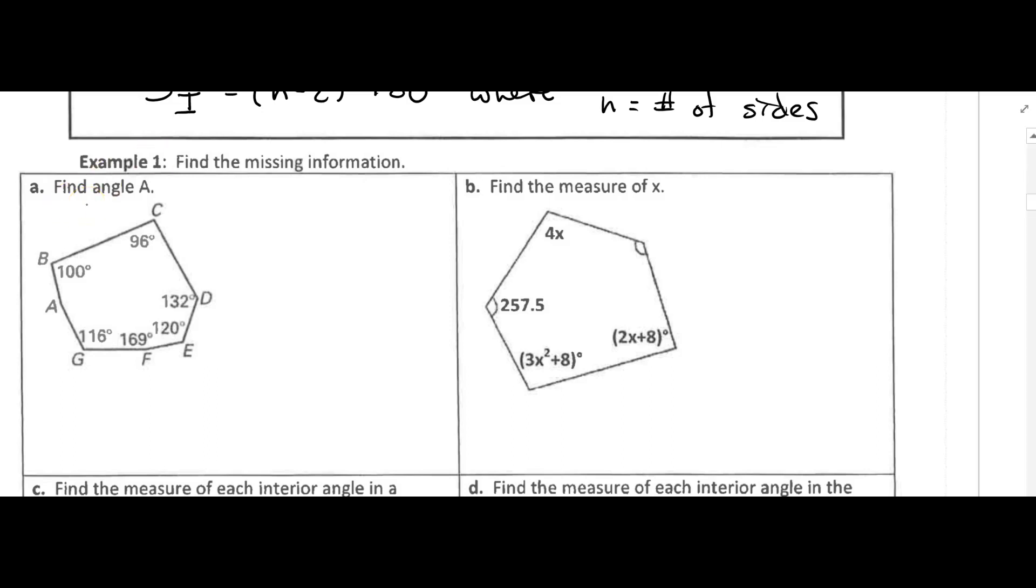We want to find the measure of angle A. We've got angle A here, and we're given the measure of all the other angles. So we have our formula for the sum of the interior angles. The sum of the interior angles is the number of triangles that we can make, which is always 2 less than the number of sides times 180.